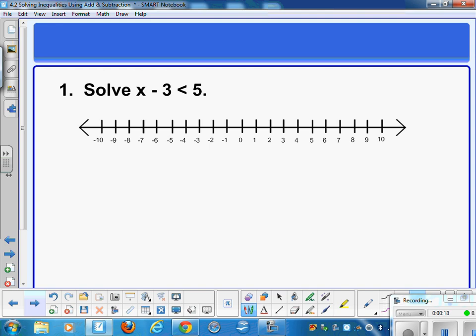Solving an inequality is an awful lot like solving an equation, in that you want to isolate the variable. So in this case, in order to get that x by itself, you want to add 3 to both sides. You're going to show your work just the way you did in solving equations, and you come up with x is less than 8.